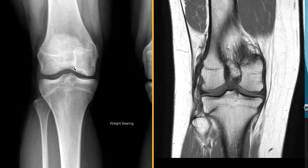This is the lateral femoral condyle — the outside of the femur. The femur coming down, the lateral articular surface looks nice, homogeneous, sharply defined margins. But the medial side has an area that is too dense and irregular along the articular surface, so this is an osteochondral defect.